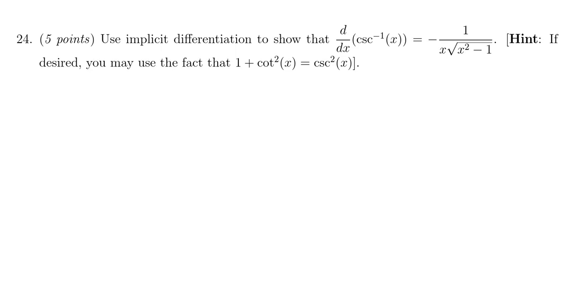In this video, we provide the solution to question number 24 for the practice final exam for Math 1210, in which case we're asked to use implicit differentiation to show that the derivative of the inverse of cosecant is equal to negative 1 over x times the square root of x squared minus 1.